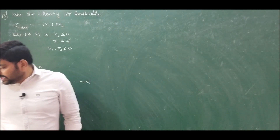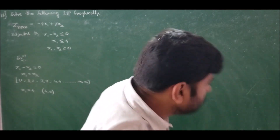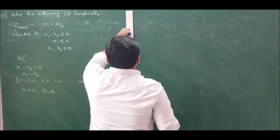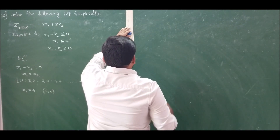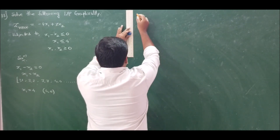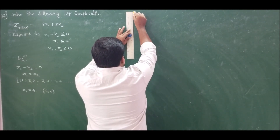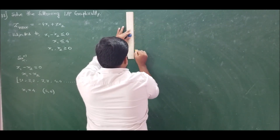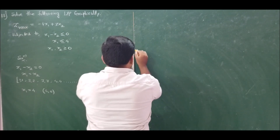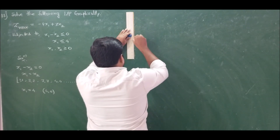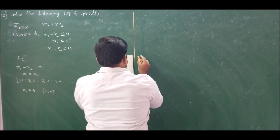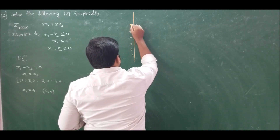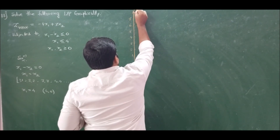Let us solve it graphically. Since x1 goes up to 4, let me set the axes up to 5 or 6. On the y-axis (representing x2) we mark values 1 through 7, and on the x-axis (representing x1) we mark values 1 through 6.